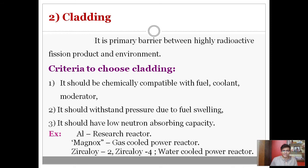The cladding material is chosen depending on the type of nuclear reactor. Aluminum is used in research reactors. Magnox alloy — an alloy of magnesium, aluminum, and beryllium — is used in gas-cooled power reactors. In water-cooled power reactors, Zircaloy-2 or Zircaloy-4 is used. Zircaloy-2 is an alloy of zirconium, tin, iron, chromium, and nickel, containing 0.15% iron, while Zircaloy-4 contains around 0.2% iron.